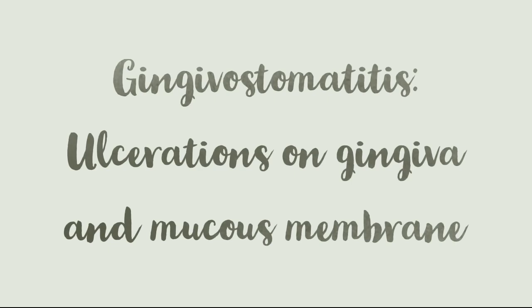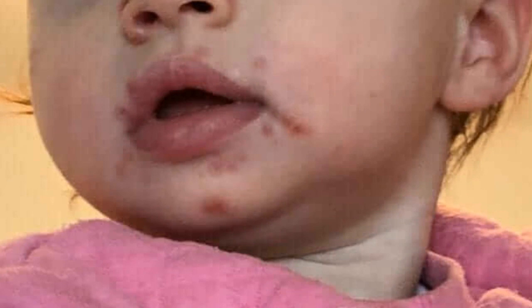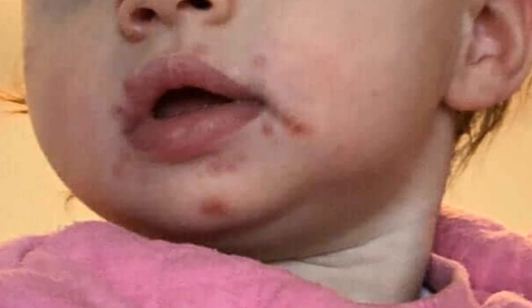This is the clinical presentation for primary herpetic gingivostomatitis. As you can see in the picture, this is a child, so it is commonly seen in children because herpes simplex virus type 1 affects children who are not vaccinated against herpes.